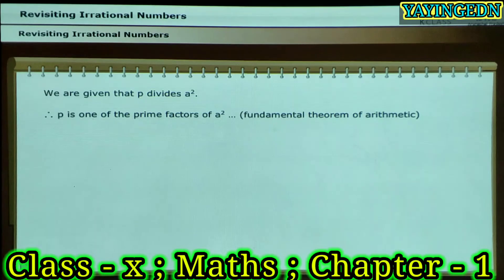We are given that P divides A squared. Therefore, from the fundamental theorem of arithmetic, we can conclude that P is one of the prime factors of A squared.